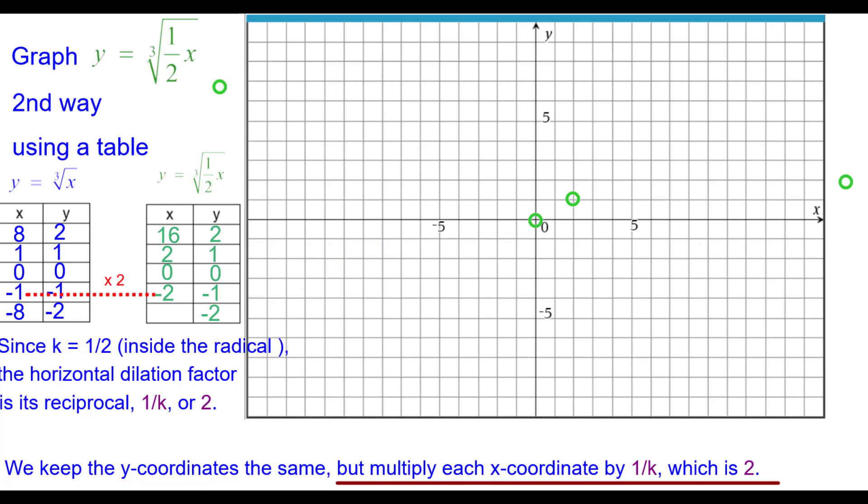So we are going to get negative two comma negative one. And negative sixteen comma negative two. Which turns up over here a little bit off my grid.